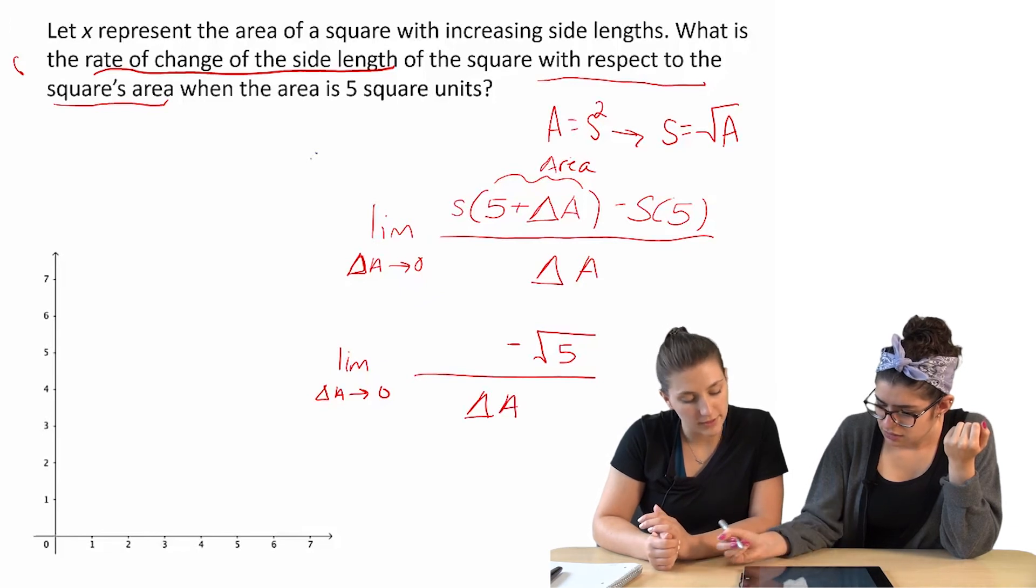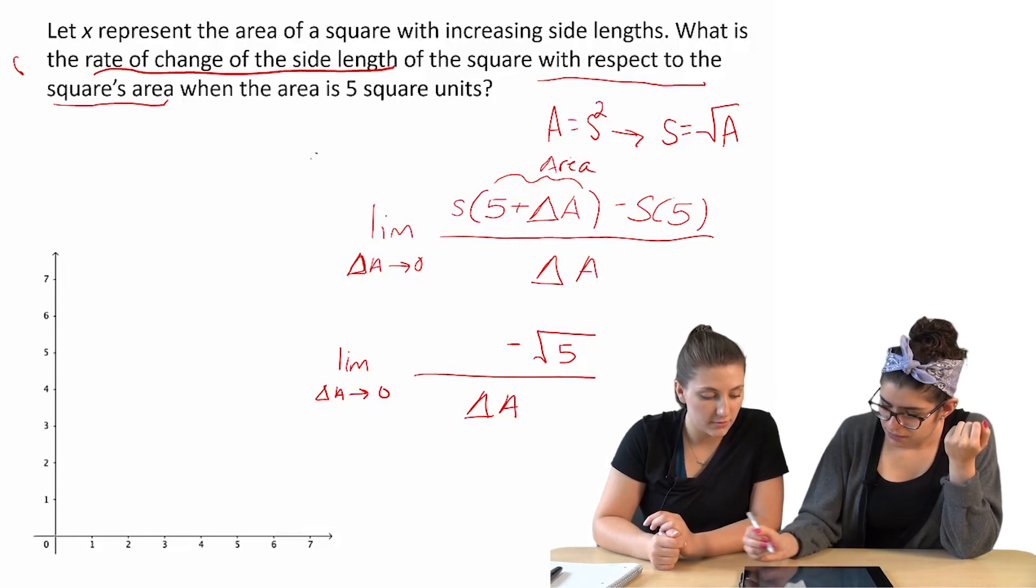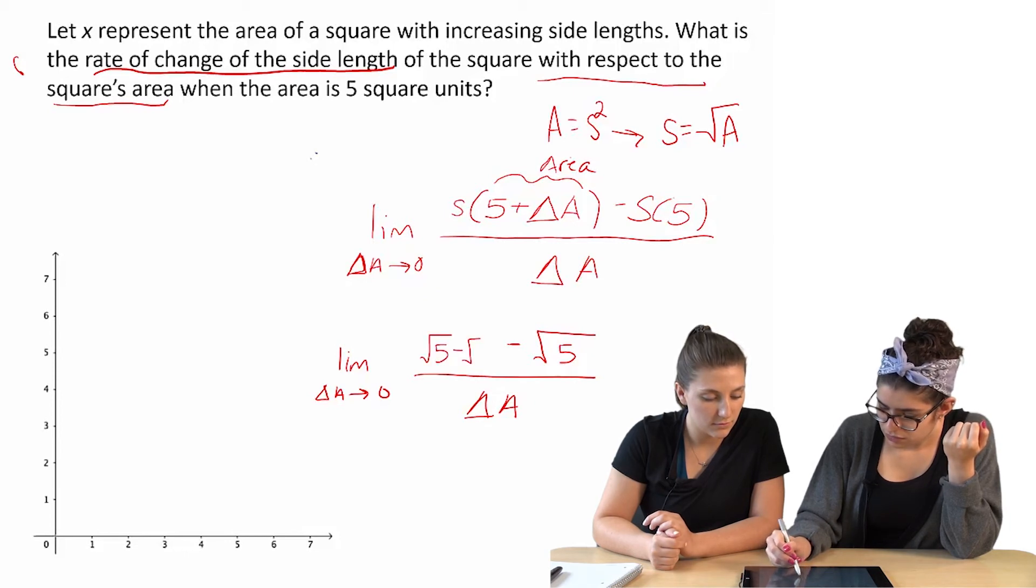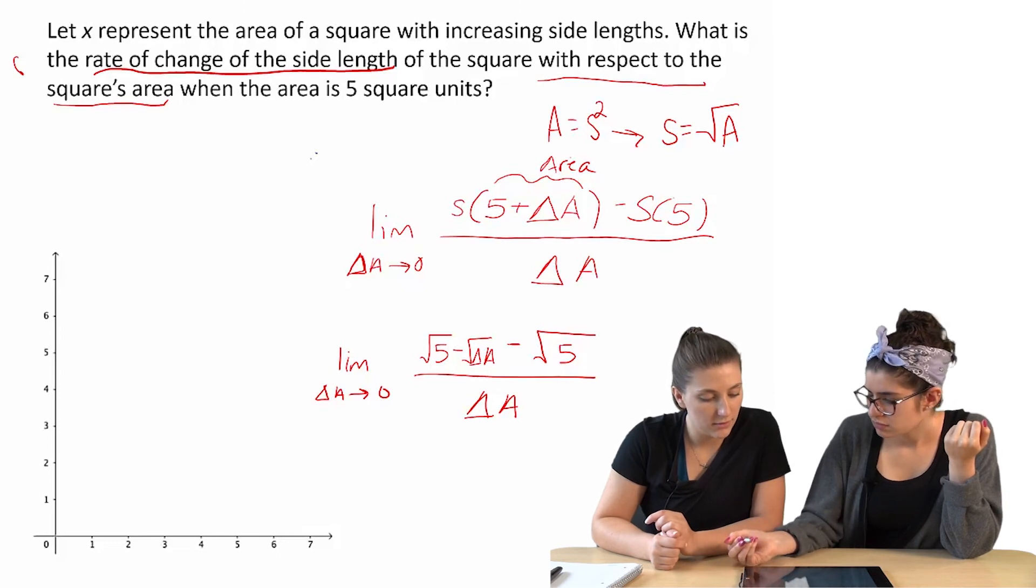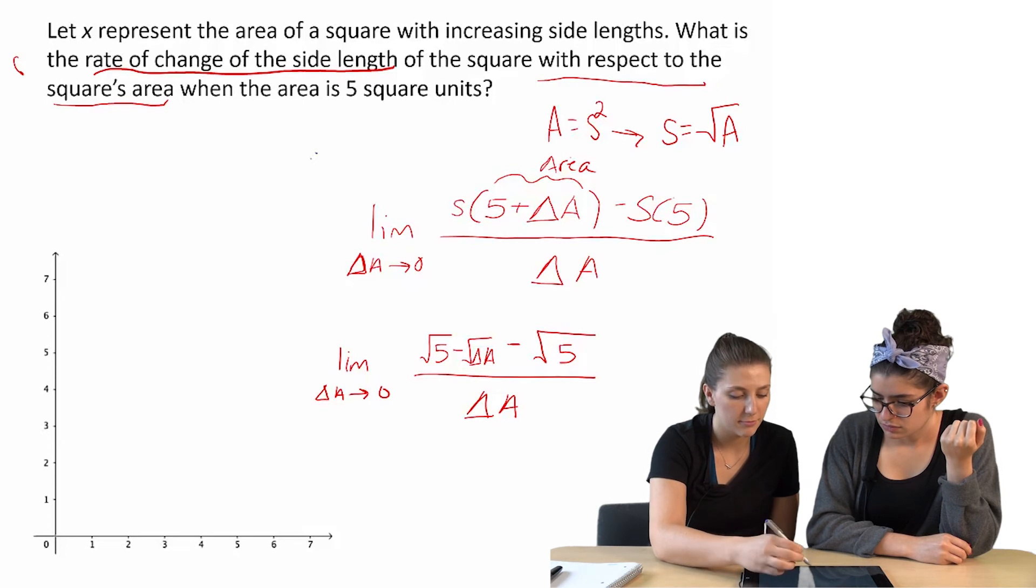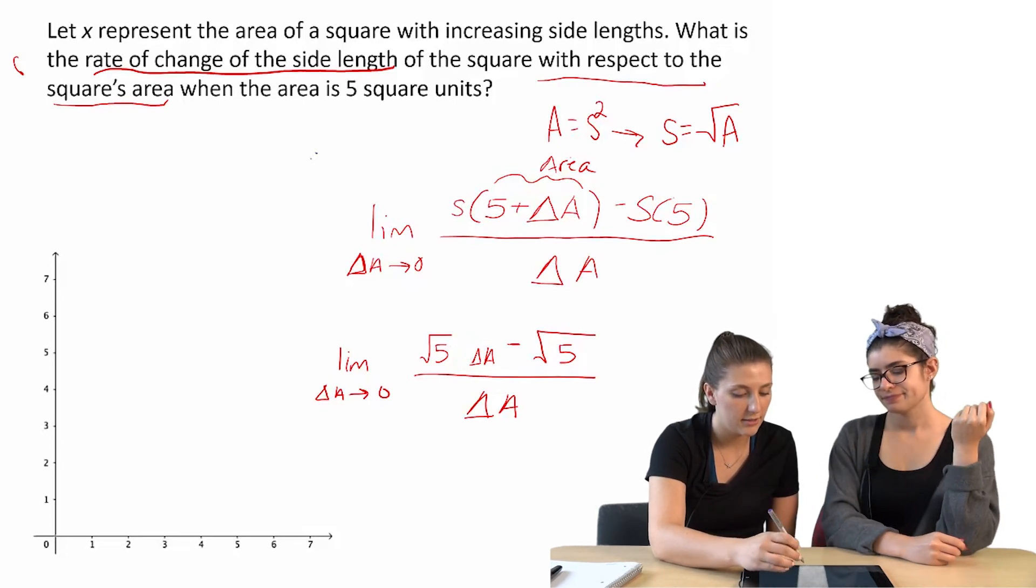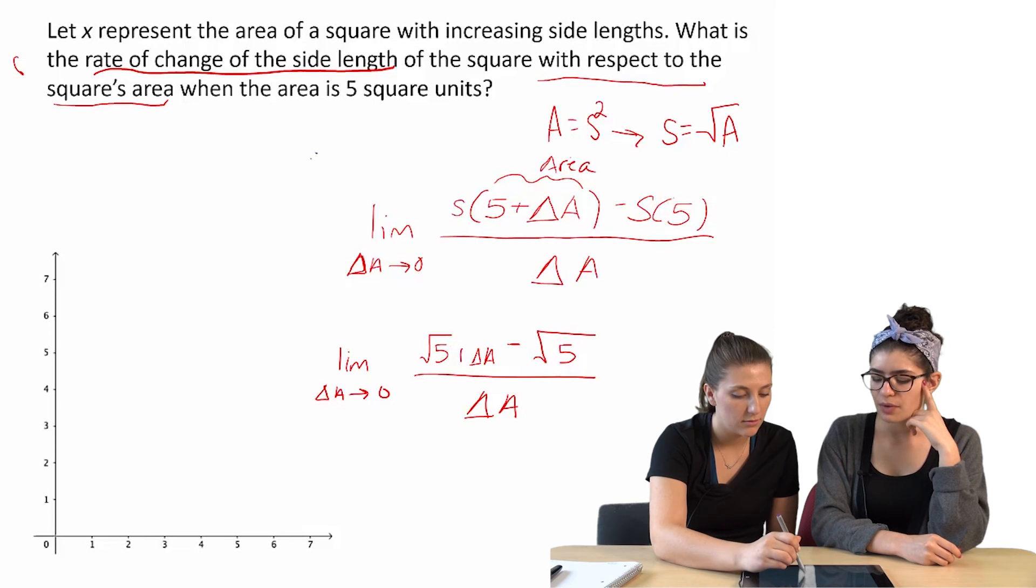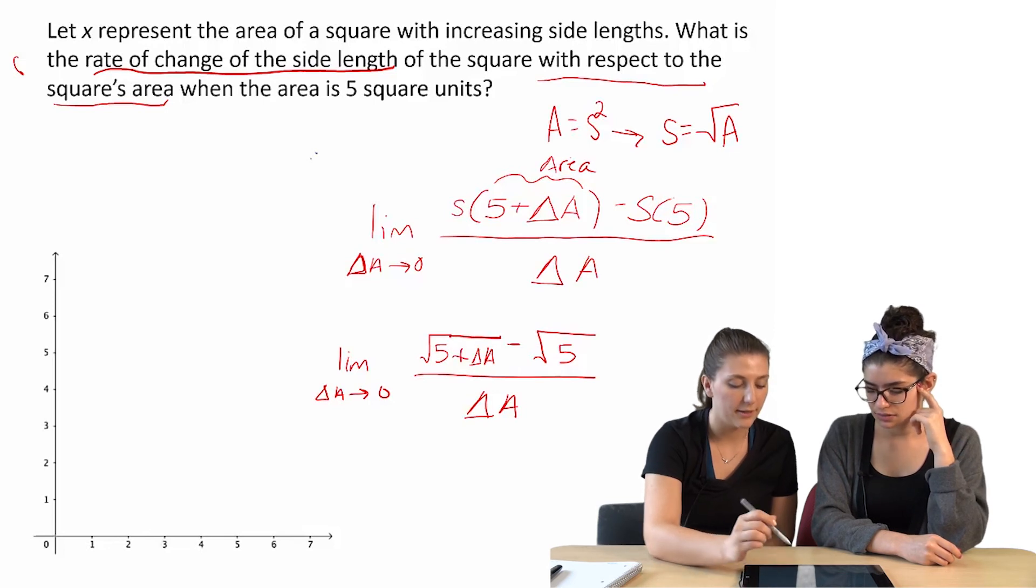And then delta a stays. So we just do... No, I think it would be... It would all go under the same square root. Because it's the side. Oh, okay. So you're keeping it together. Yeah. Okay.